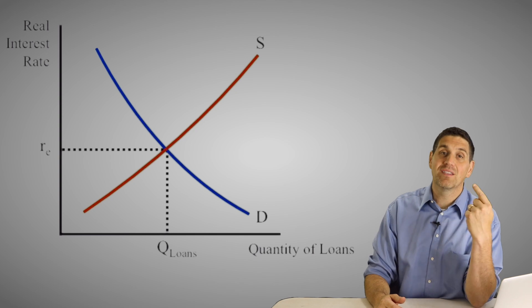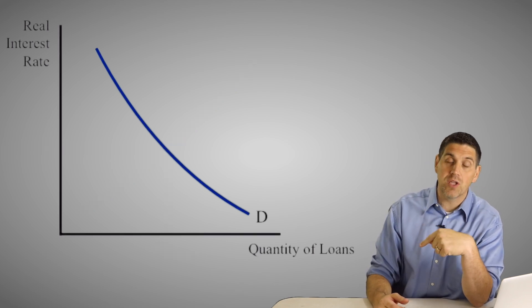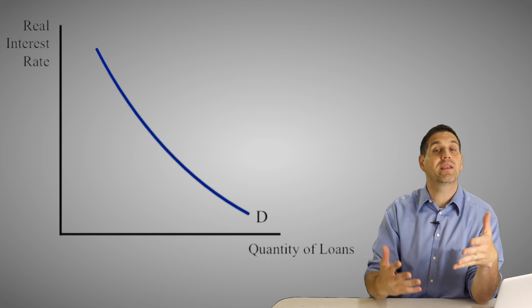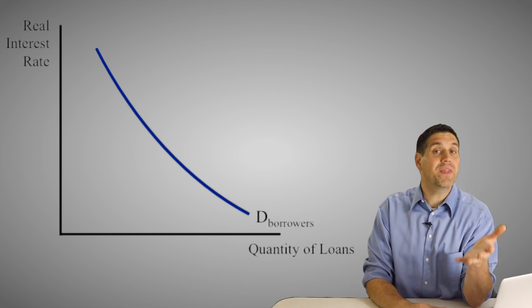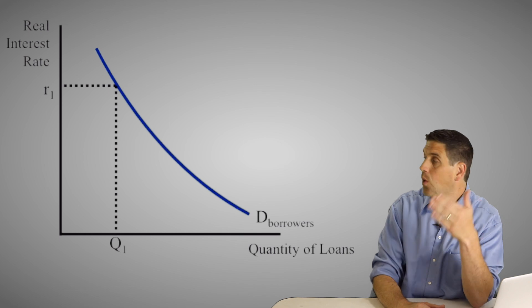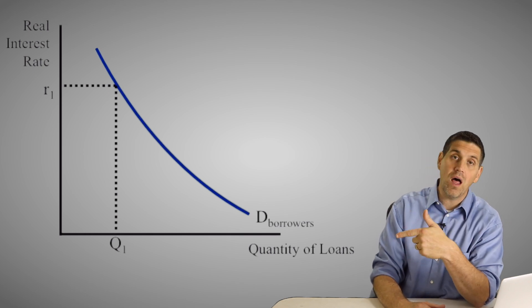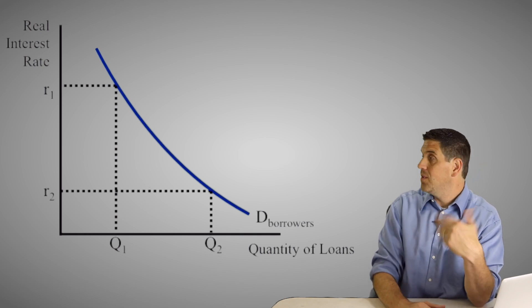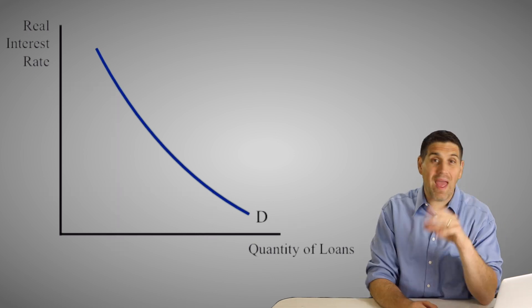This is the loanable funds market. The demand curve is downward sloping and it's based on people's willingness to borrow loanable funds. So when the interest rate is really high, people don't want to borrow very much — the quantity demanded of loans is very low. But when the interest rate is really low, then people want to borrow more. So a downward sloping demand curve.